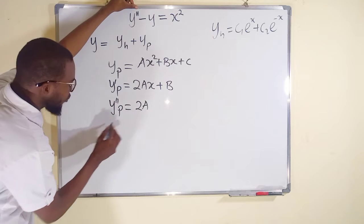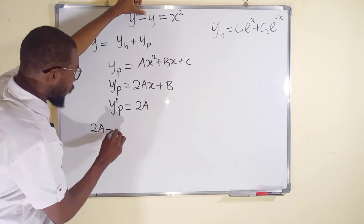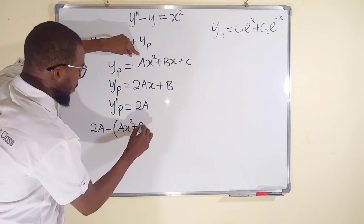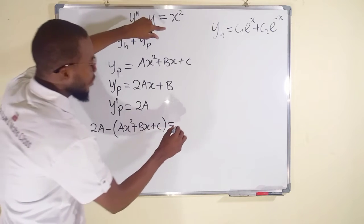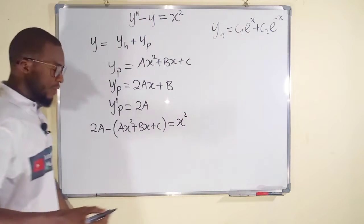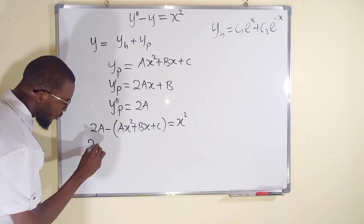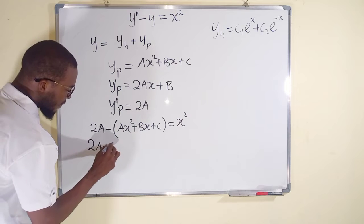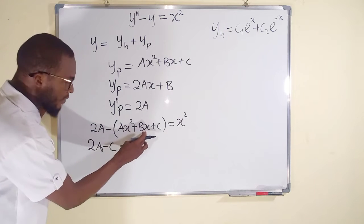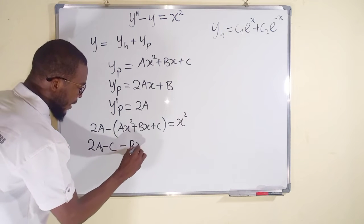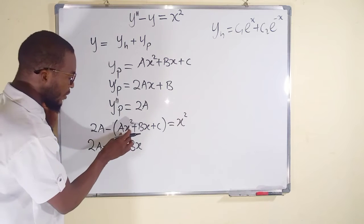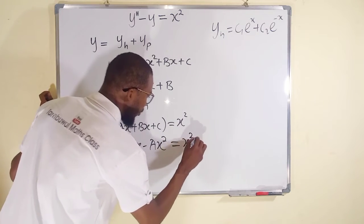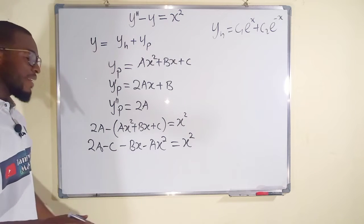Substituting: y double prime is replaced with 2a, minus y, which is the bracket a x squared plus b x plus c, all set equal to the right hand side x squared. Distributing the negative sign, we have 2a minus c, then minus b x, then minus a x squared, all equal to x squared.